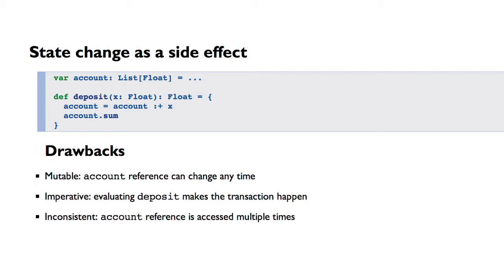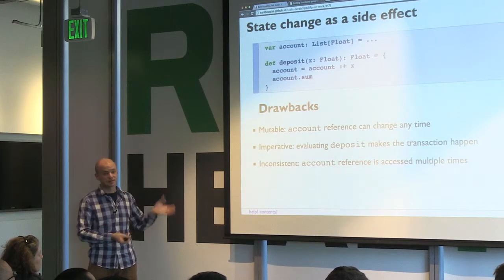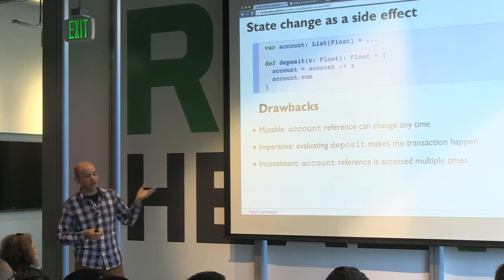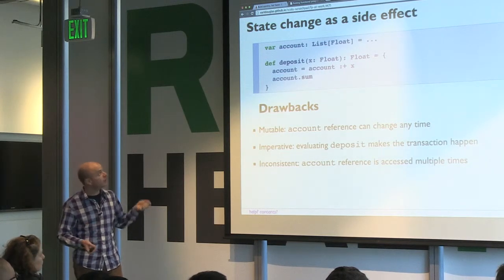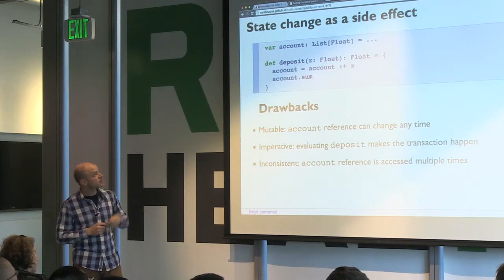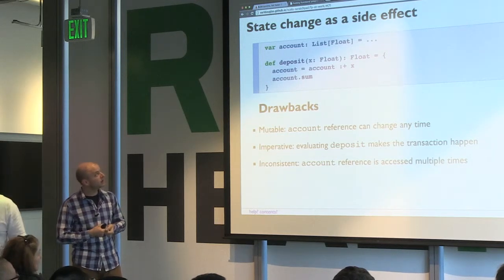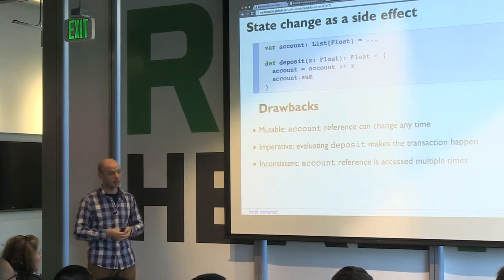Here's the non-functional way we might write something like a deposit function. Off somewhere in a global context we have an account — a globally accessible var reference to a list of floats. When we call the deposit function with some amount, the first thing we do is grab that account and update it by appending a transaction, and then we return the balance of the account by summing up the list of floats.